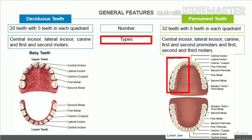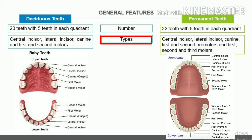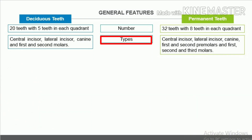Types of teeth. Deciduous teeth consist of central incisor, lateral incisor, canine, and 1st and 2nd molars. Permanent teeth consist of central incisor, lateral incisor, canine, 1st and 2nd premolars, and 1st, 2nd, and 3rd molars.